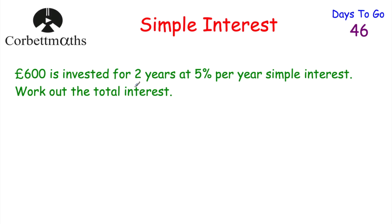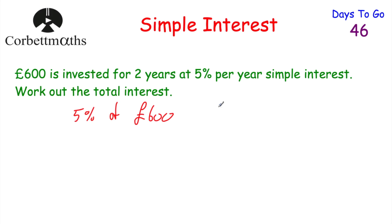With simple interest, the amount of interest doesn't change. Whereas with tomorrow's topic — compound interest — the amount of interest each year will change. So with simple interest, we'll just work out 5% of the initial amount of money. Now this is going to be a non-calculator question. I'll show you some questions that are calculator and some that are non-calculator.